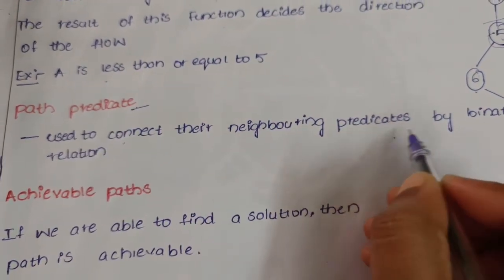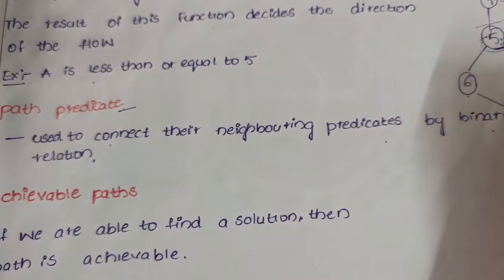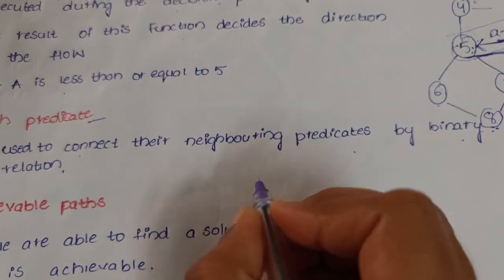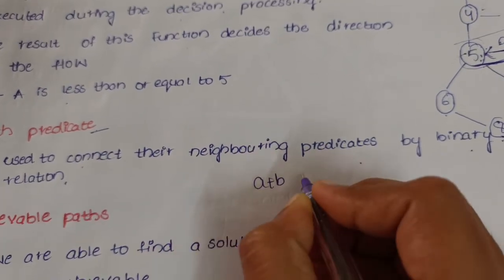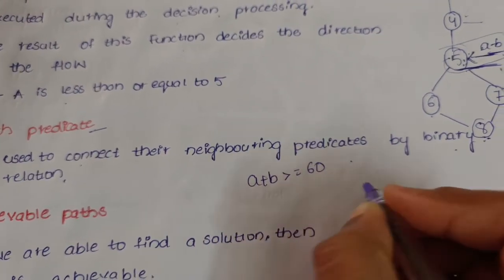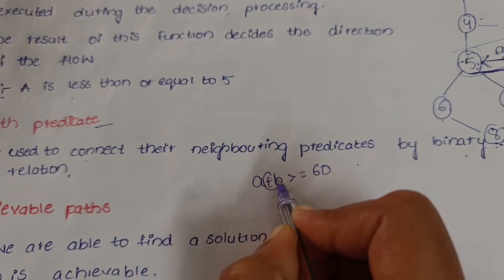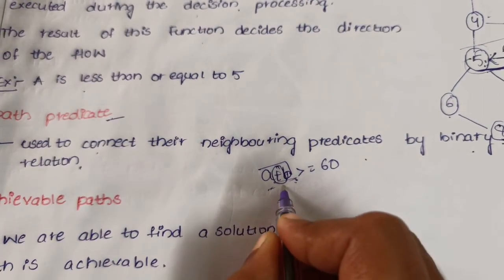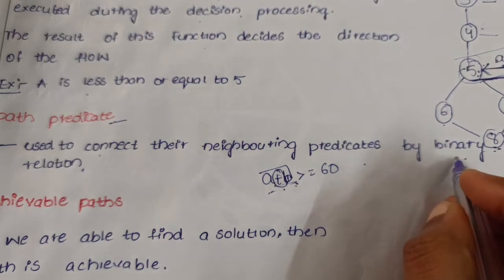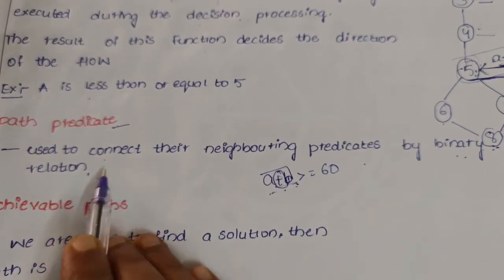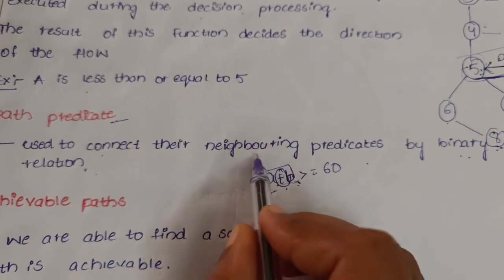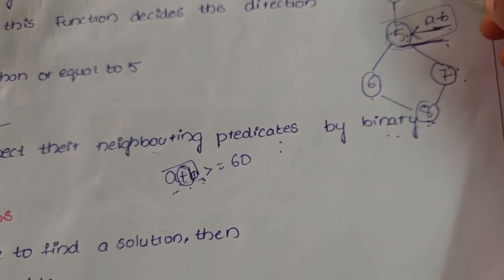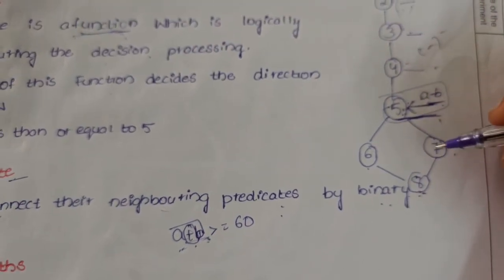We are performing a binary operation between the neighboring nodes and using it to connect the neighboring predicates by binary relation. A binary operation is nothing but performing an operation between two operands, like a plus b greater than or equal to 60 or something similar. Connecting neighboring predicates — for example, 2 plus 3 connecting with the subtraction relation — is called a path predicate.